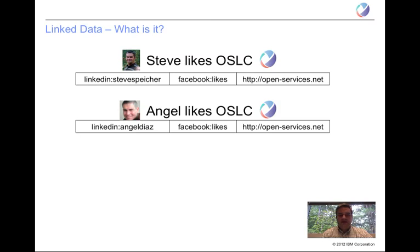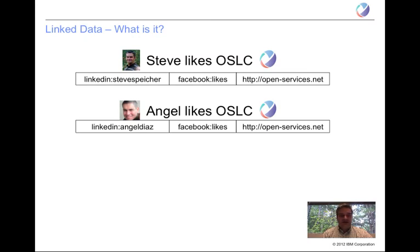We can clearly identify these different aspects of the data by giving it URIs. So we can say Steve likes OSLC by giving Steve a URI — which happens to be information about me hosted by LinkedIn — the relationship 'likes,' and then OSLC, distinguished from other OSLCs on the internet by the URL open-services.net. And similarly for Angel. When you group these three things together, it makes an interesting statement, and you can confirm that yes, Angel and Steve really do like the same OSLC.